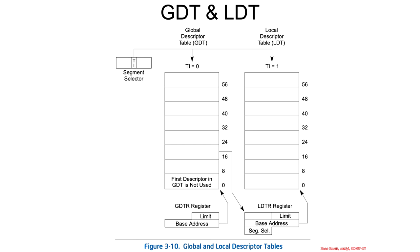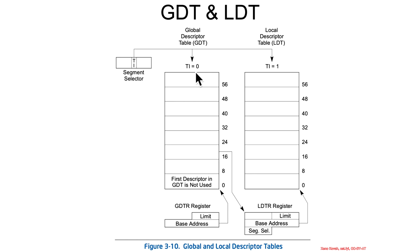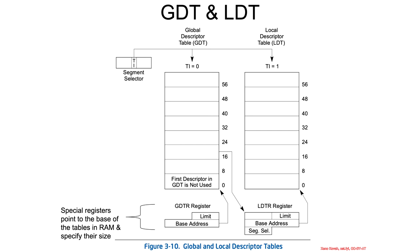Let's learn more about the GDT and LDT tables that we saw references to in the previous section. The segment selector has a table indicator bit: if it's 0, it points at the GDT, and if it's 1, it points at the LDT. We're going to dig more into that.